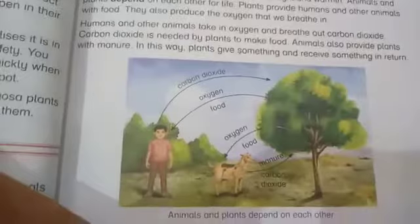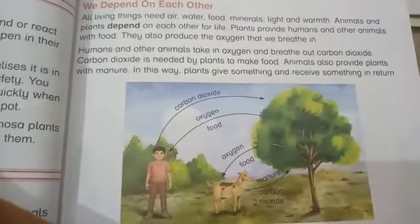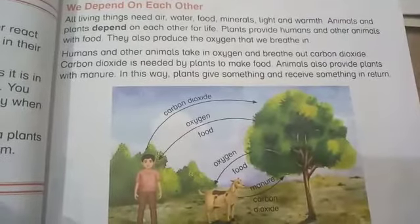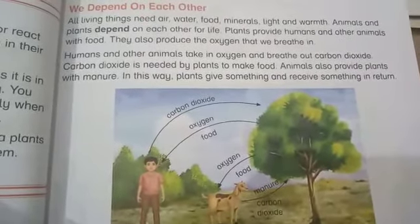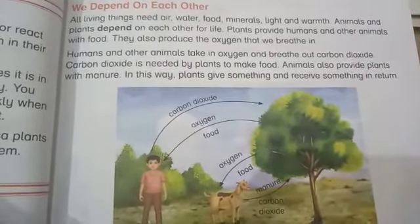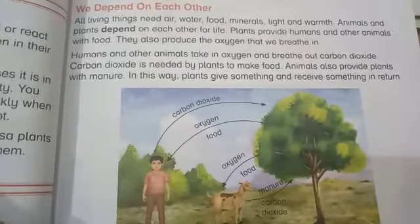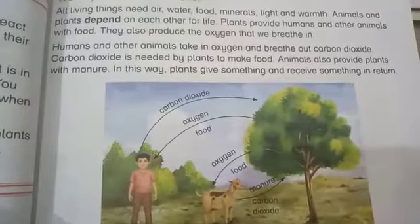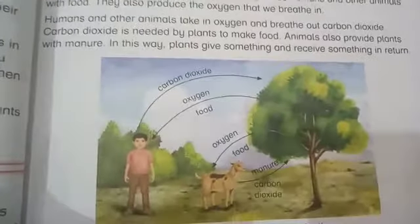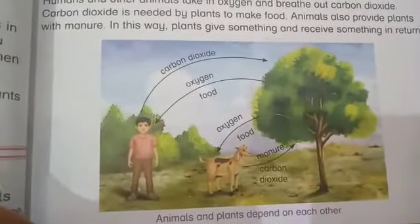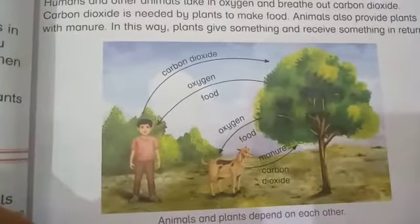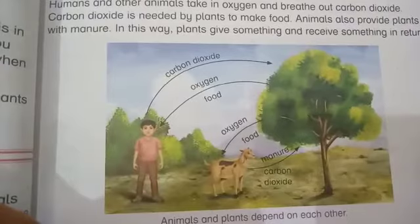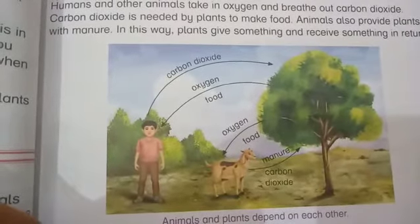Now we will study about the dependence of living things upon one another. All living things depend upon each other for air, water, food, minerals, light, and warmth or heat. Animals and plants depend on each other for life. Plants provide animals and human beings with oxygen gas that is used by them for the process of respiration.